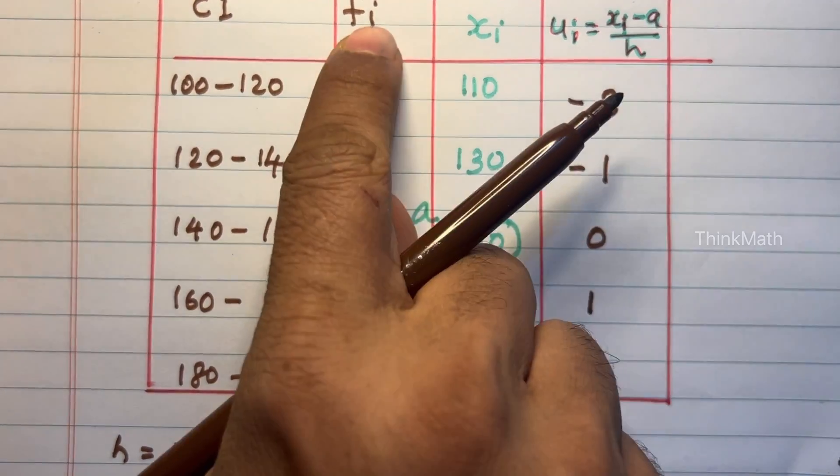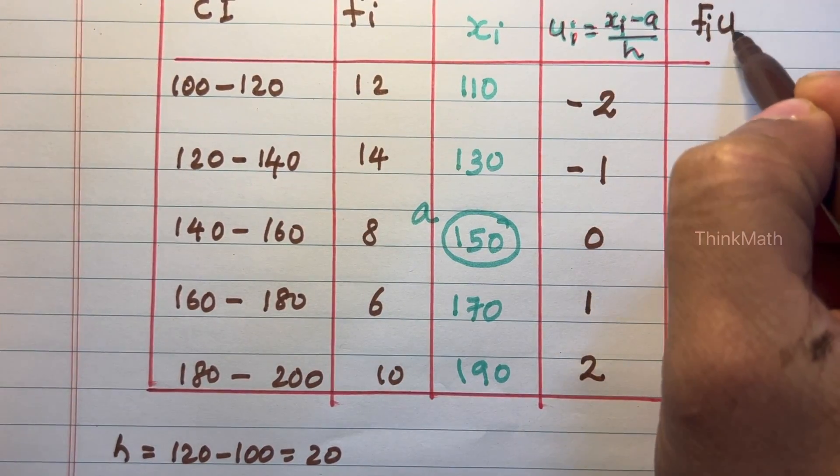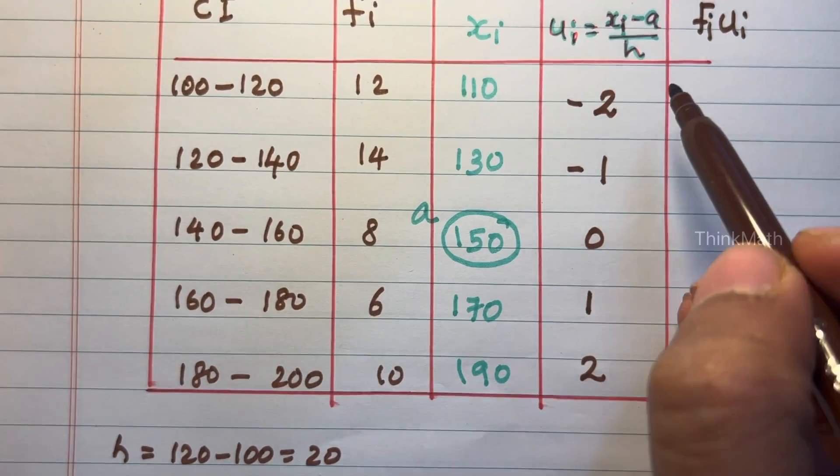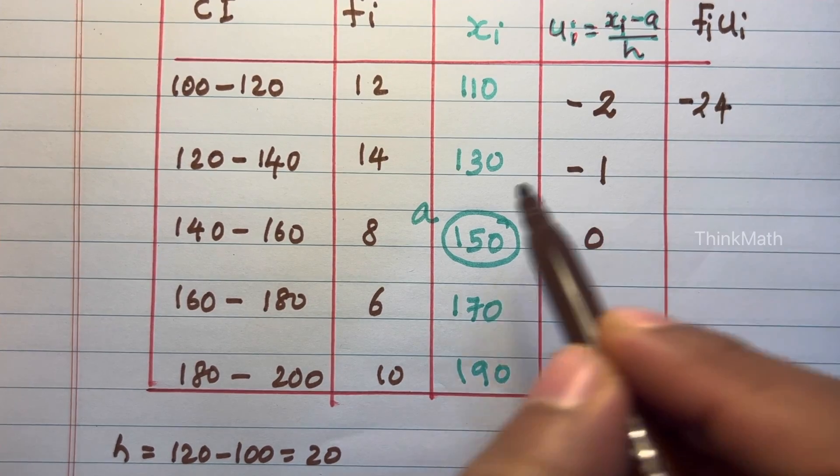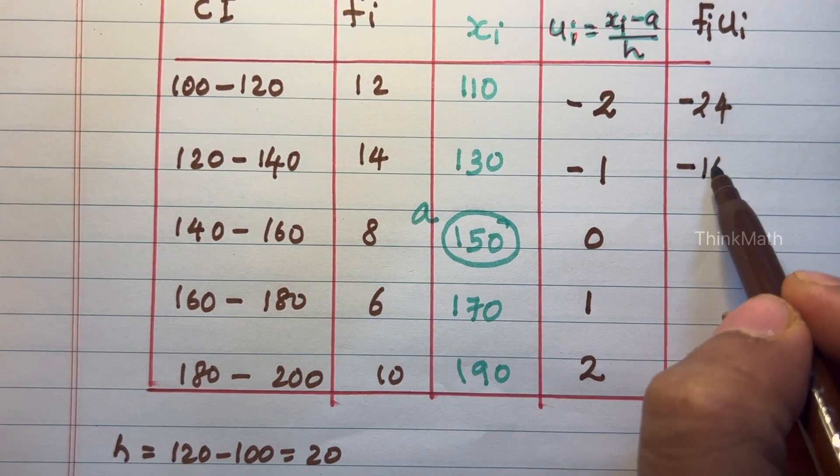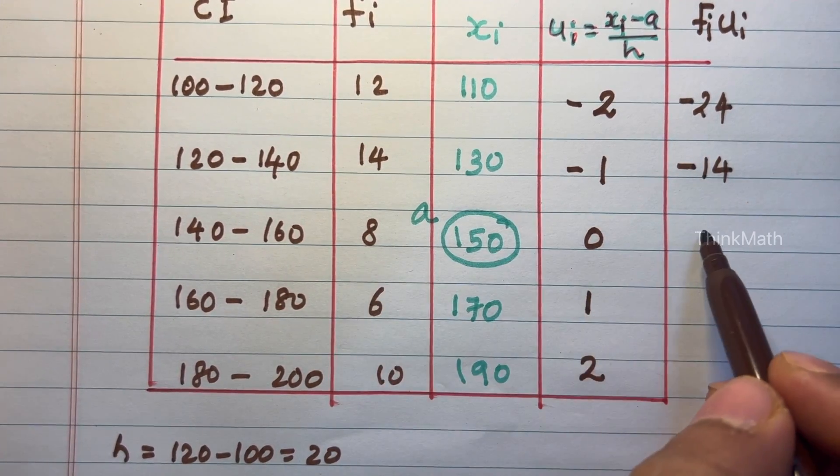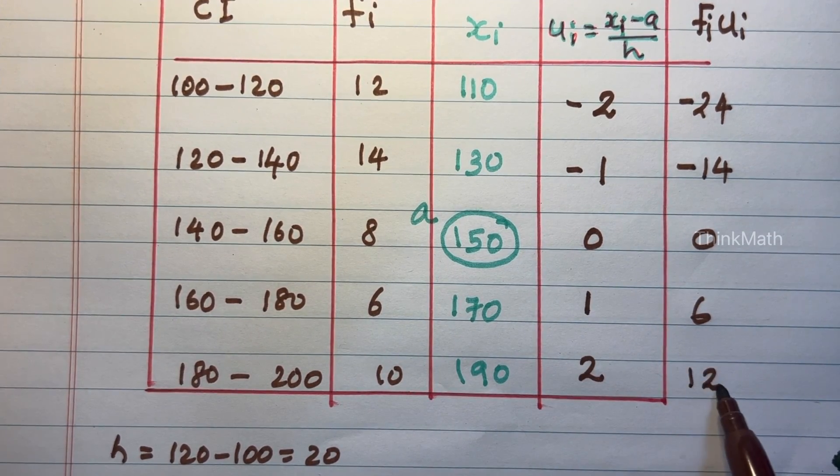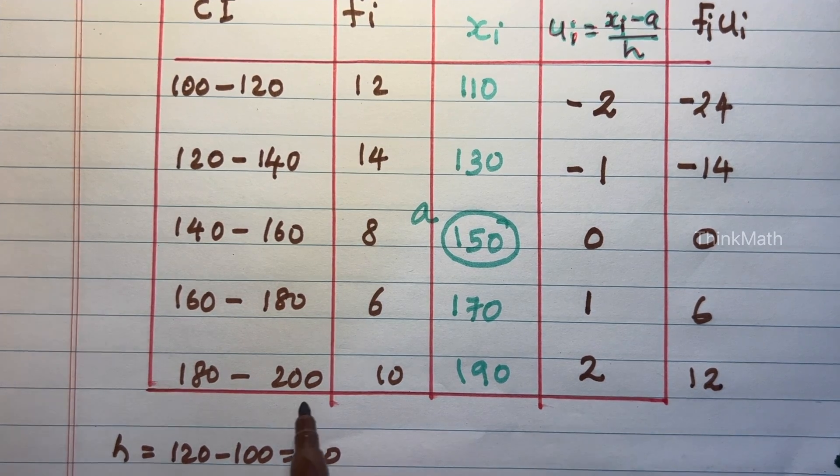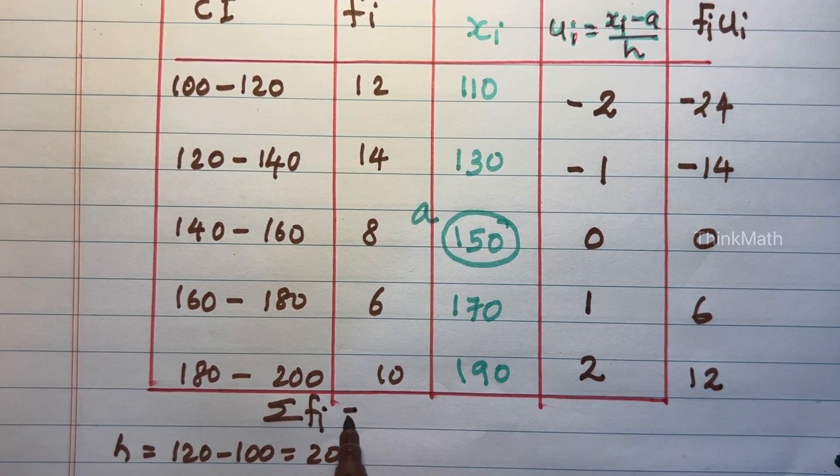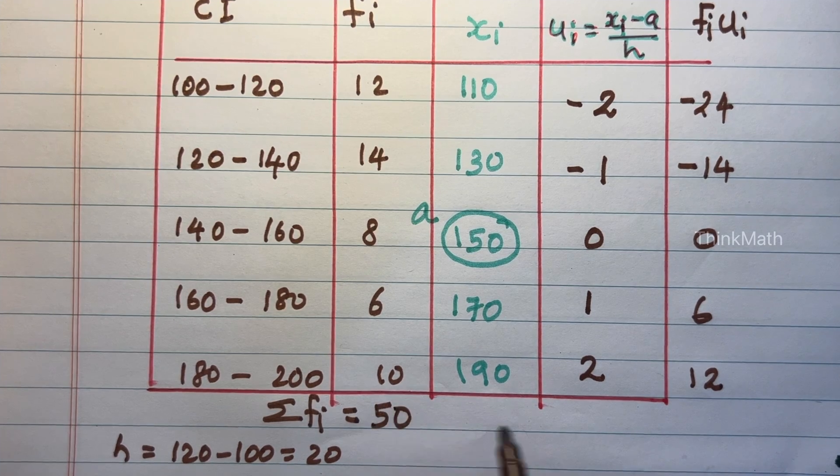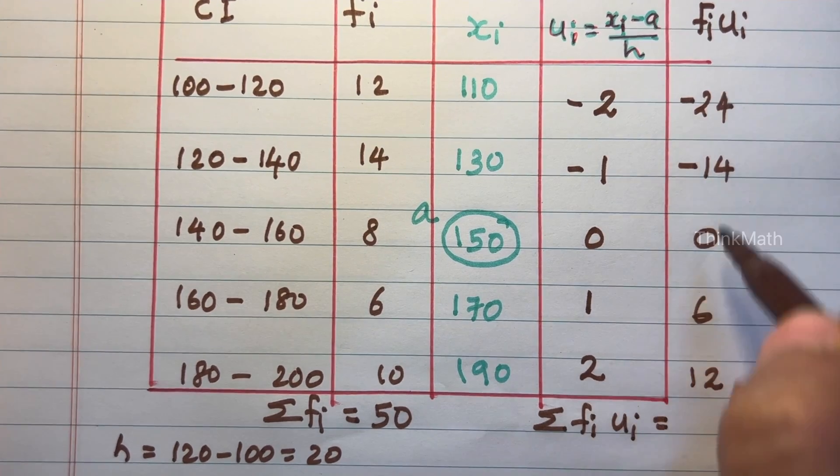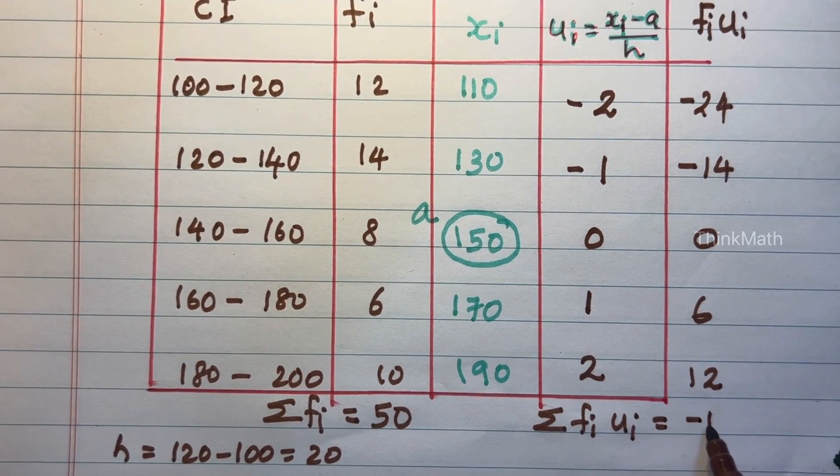Next, the product of fi and ui. So the product is 12 into minus 2, that is minus 24. 14 into minus 1, minus 14. 0 into 8 is 0. 6 into 1 is 6. 10 into 2 is 12. Next, sigma fi is equal to 50. Sigma fi ui is equal to the sum of this whole, that is equal to minus 12.